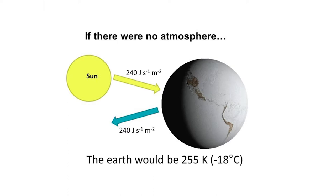Consider the Earth with no atmosphere. The Earth absorbs about 240 watts per meter squared of energy from the Sun. It emits that amount of energy to keep in balance, and this would suggest that the surface of the Earth would be 255 degrees Kelvin — that's below freezing.